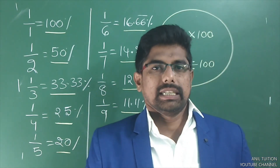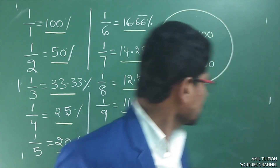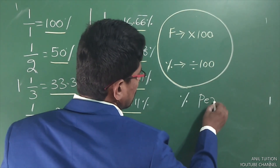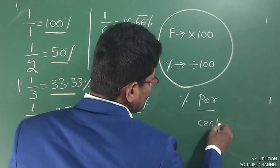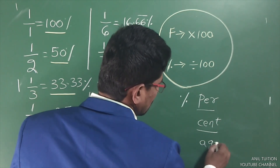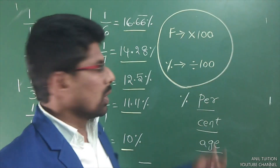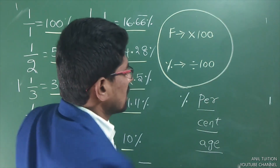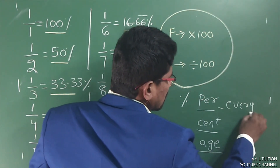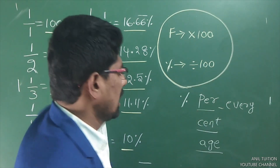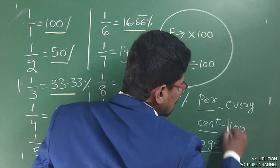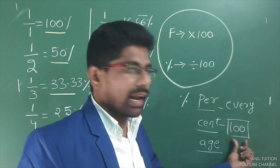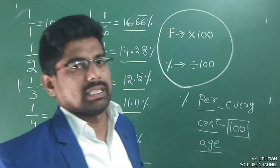First of all, what is percentage? The name itself indicates: 'per' means 'for every,' and 'cent' means 100. So the meaning of percentage is: for every 100, we have to calculate. This is nothing but percentages.